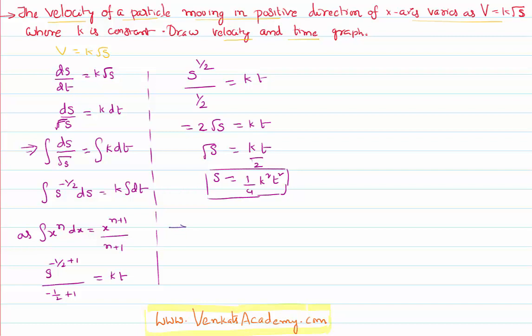As I got displacement, I will differentiate this once with respect to time. Differentiate the above once with respect to time will give us dS by dT is equal to d by dT of 1 by 4 K square T square.